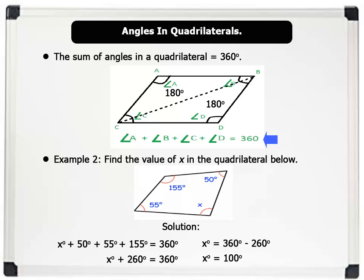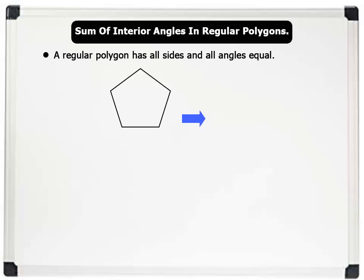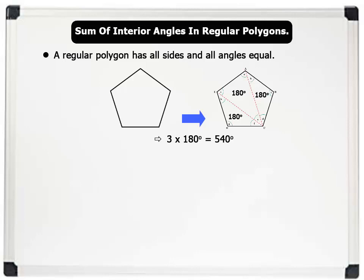Now let us see angles in other regular polygons. A regular polygon has all sides and all angles equal. For example, a pentagon with five sides can be split by two diagonal lines into three triangles equaling 180 degrees each. So the sum of angles in a pentagon is three times 180, which equals 540 degrees. Notice that the number of triangles depends on the number of sides of the polygon. A hexagon has six sides and is divided into four triangles, so the sum of interior angles equals four times 180, which equals 720 degrees.